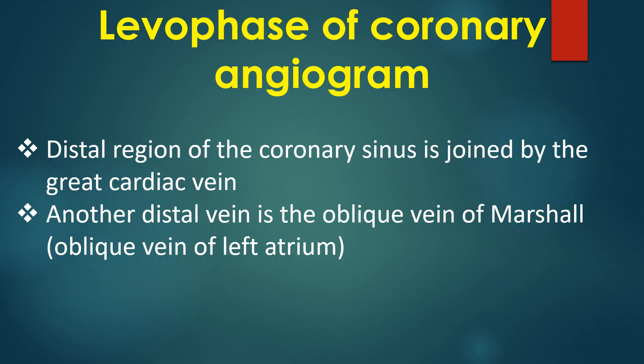The distal region of the coronary sinus is joined by the great cardiac vein. Another distal vein is the oblique vein of Marshall, or oblique vein of the left atrium.